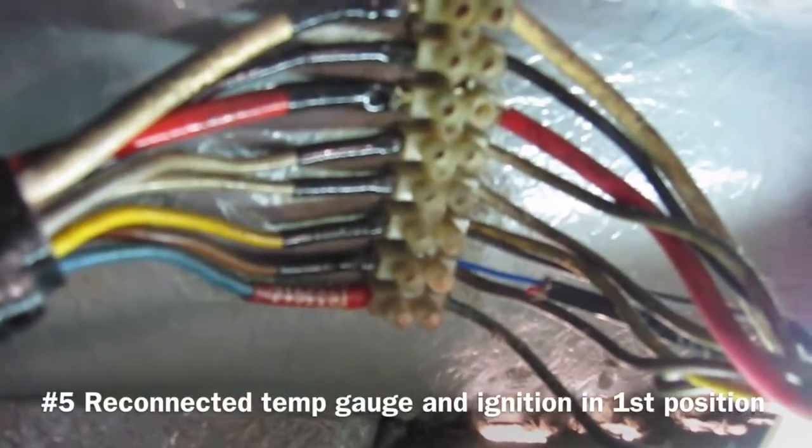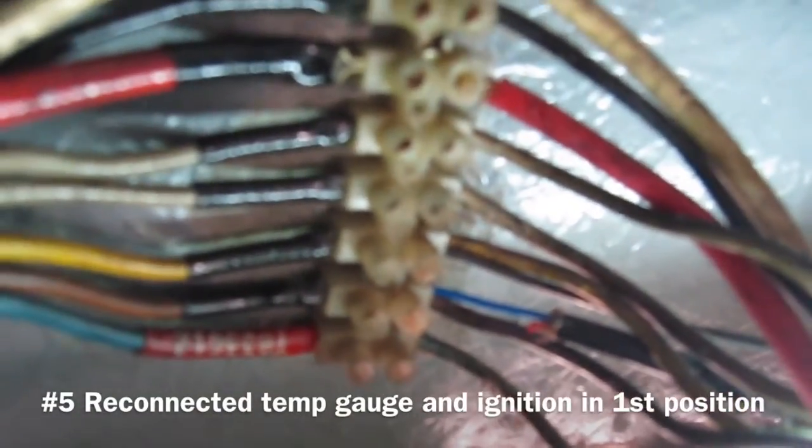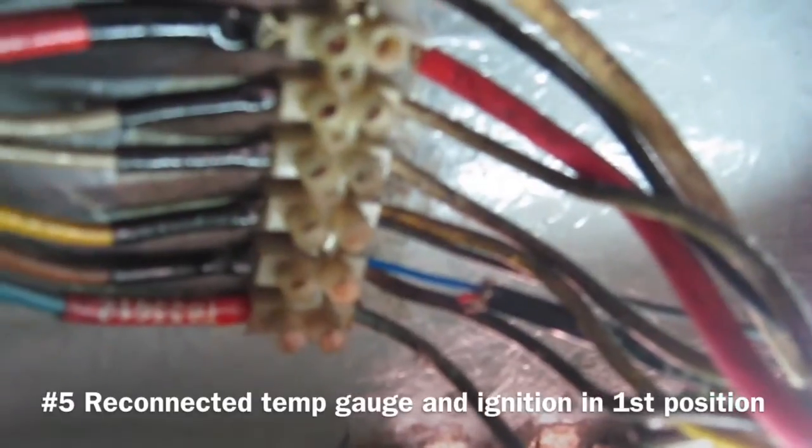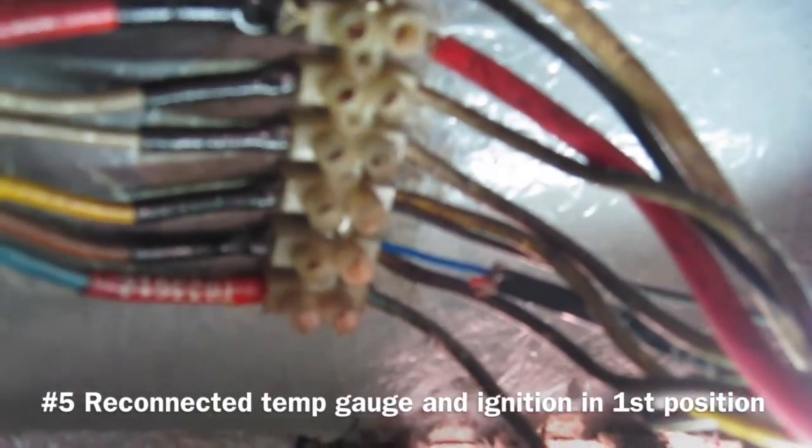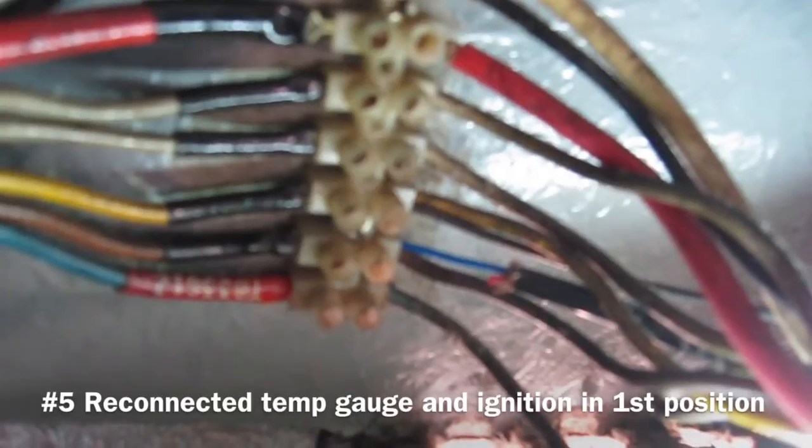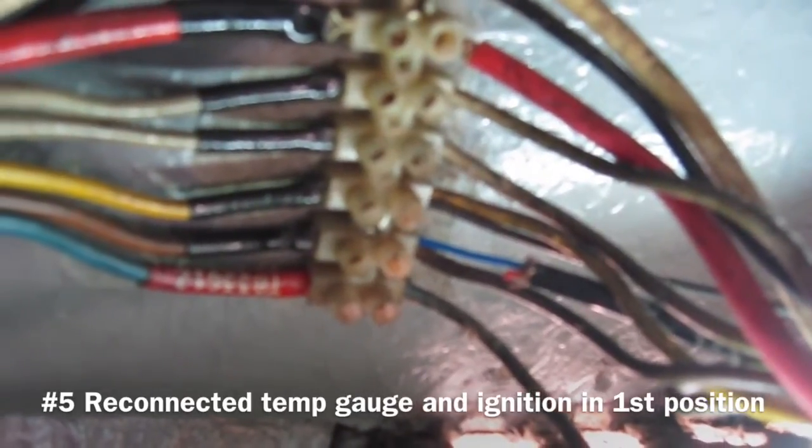Now I have reconnected the yellow wire together from the gauge meter together with the wire that goes to the alarm unit.